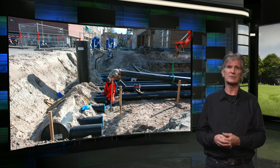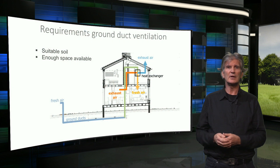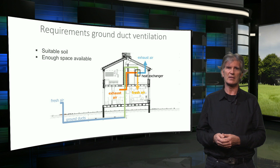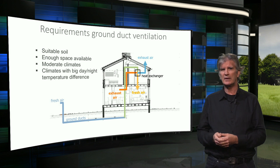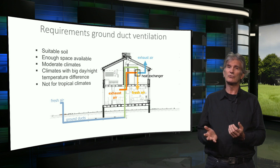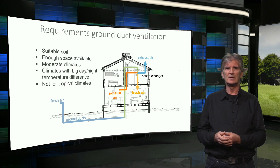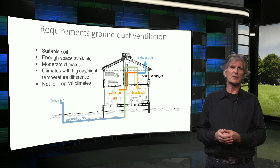It is obvious that this ground duct technology is not feasible everywhere. First, the underground must be suitable to bury the ducts, and there must be enough space to provide enough length for the ducts. Furthermore, the climate must be suitable. In a moderate climate with cold winters and warm summers, it is most effective. It also works in climates with a big temperature difference between day and night. But in a tropical climate with a high average outdoor temperature, it is not effective, because the temperature difference between the air and the soil is too small.